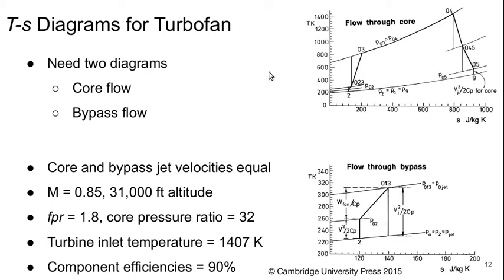So if we want to put together the T-S diagram for a turbofan engine, we actually need two, because we've got two flow streams. We need one for the core flow and one for the bypass flow. So here's an example of what that would look like. In this example, the core and bypass jet velocities are set to be exactly equal. The cruise Mach number is 0.85 at 31,000 feet altitude. Fan pressure ratio is 1.8 with a core pressure ratio of 32, and the turbine inlet temperature is 1407 K with 90% turbine and compressor efficiencies.